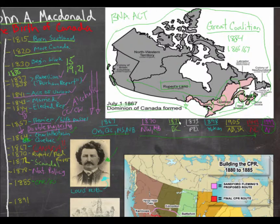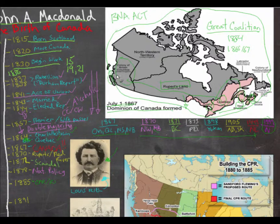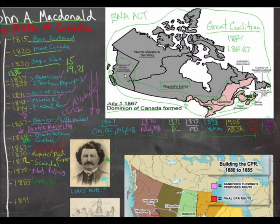A year later, in 1871, MacDonald had to deal with the entry of British Columbia way out west into the Confederation. British Columbia was a target for the United States, but MacDonald was very keen and adamant that Canada have this west coast and access to the Pacific Ocean. Part of the negotiation was a promise that within 10 years, a rail connecting British Columbia to the east would be built — eventually what would become known as the Canadian Pacific Railroad.